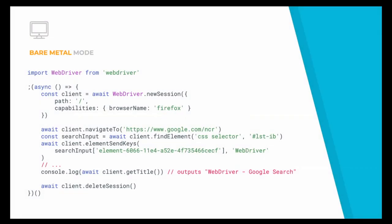Here's an example using the bare metal WebDriver package, where you have a navigate-to command and a find-element command. When you find an element, you need to know what the protocol returns in order to access, for instance, the element ID. This is sometimes not useful if you want to write an extensive test suite, because you don't want to deal with low-level protocol primitives. But this WebDriver package helps if you want to build a new framework for your community — examples include Spectron, the test framework for Electron, which used this capability.